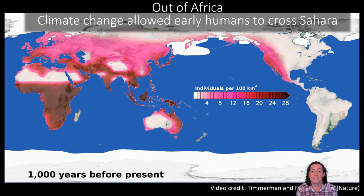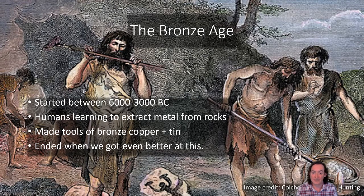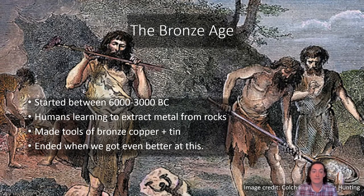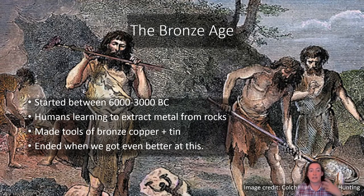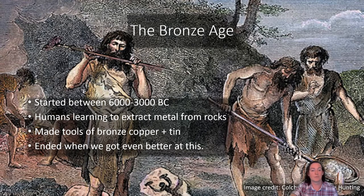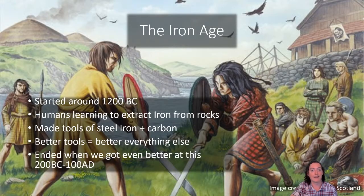If the climate had never cooled enough that the Sahara became traversable, we would never have got out of Africa. If it never rewarmed, early humans would never have got into America. The next time period after the Stone Age is the Bronze Age, and essentially we are getting better at utilizing Earth's resources — we're able to extract metals from rocks, specifically copper and tin to make bronze. Bronze is really important because it is much better for making tools than stone, and we can start making more complicated instruments. This period went from around 600 to 300 BC.